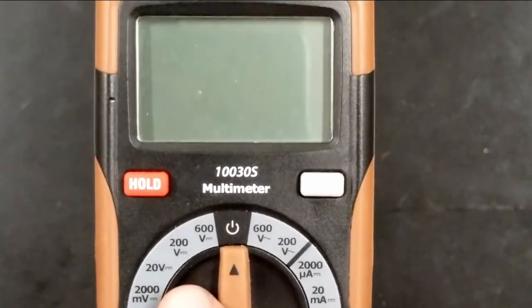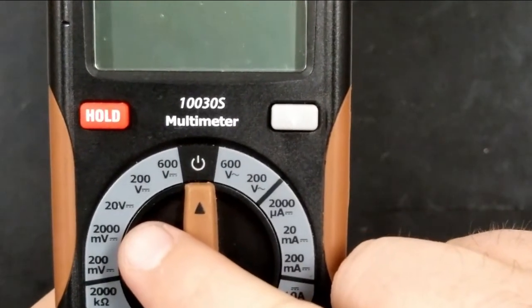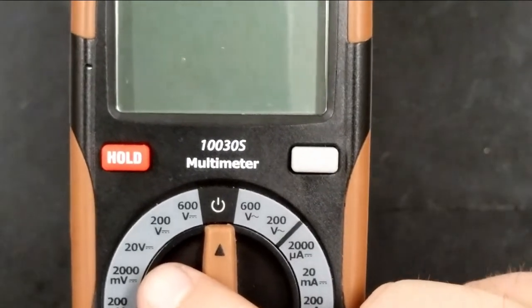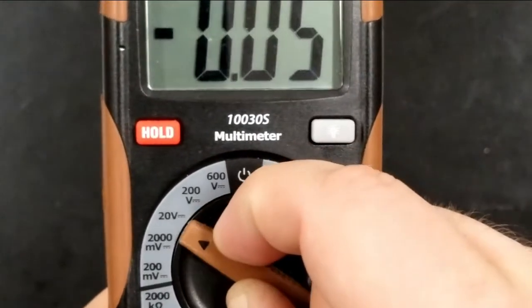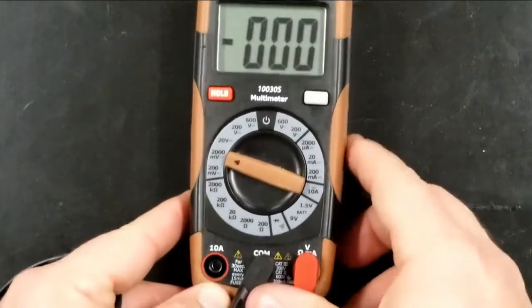Since I've got a 1.5 volt battery to deal with, the 2,000 millivolt range would be acceptable. Anything above 2 volts, though, it would not register, and I'll show you what that looks like. I'm going to go ahead and set that to the 2,000 millivolt setting for right now, and you'll notice right now it reads zero.